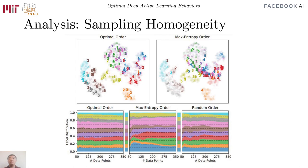Finally, the most interesting finding suggests that the optimal order acquires data very homogeneously. For object classification on the Fashion MNIST dataset, the top panels plot the t-SNE embedding of the images, color-coded by labels. Numbers represent acquisitions at different iterations. While the max entropy order samples closely to the class boundary, the optimal order achieves a quite uniform coverage. The bottom plot shows the label distribution in the acquired dataset, with the optimal order being much more balanced than max entropy.